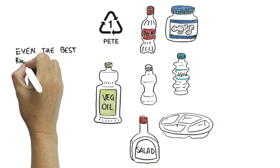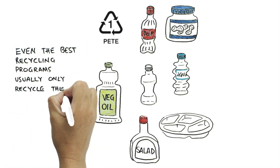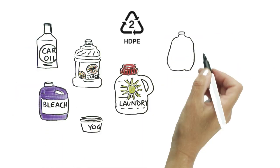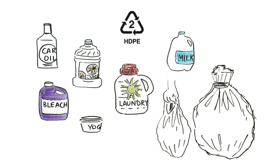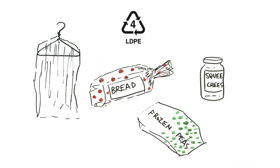See, the problem is that even the best recycling programs usually only recycle the good plastics such as pop and water bottles in Category 1, milk jugs, green garbage bags and grocery bags in Category 2, and things like bread bags and dry cleaning bags in Category 4.